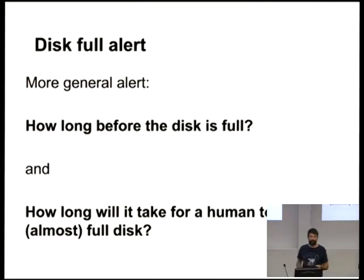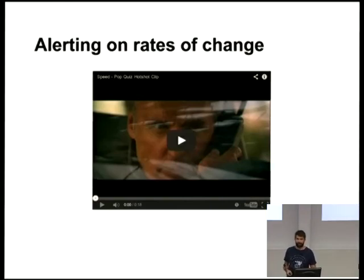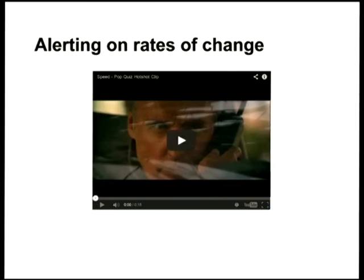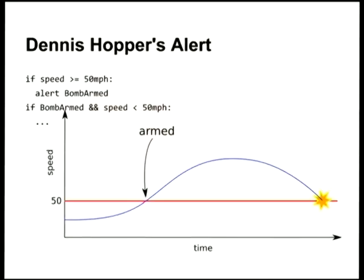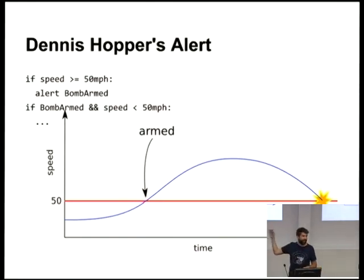More interesting is: how long until a disk is full, and is that time remaining sufficient to go buy a new hard disk? This is like the Speed movie where Dennis Hopper calls Keanu and says 'there's a bomb on the bus — if the speed drops below 50, the bomb explodes.' Dennis Hopper's alert fires when the bus goes below 50 mph. But what Keanu really needs to know is when the bus starts slowing down — because as long as it's going over 50 he has time to act. So what he needs is the inflection point of velocity — i.e., when acceleration crosses zero. That's when the alert should fire.